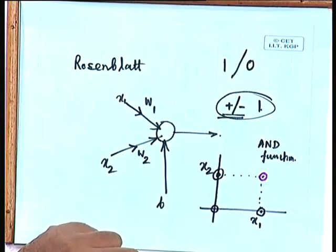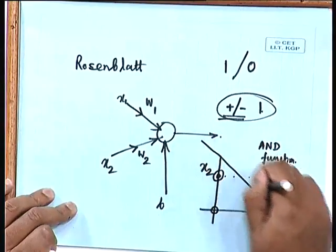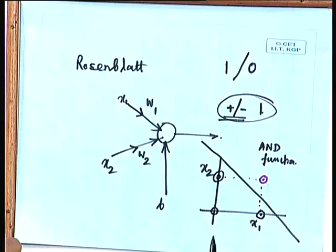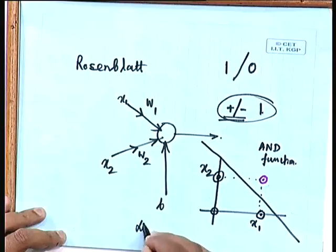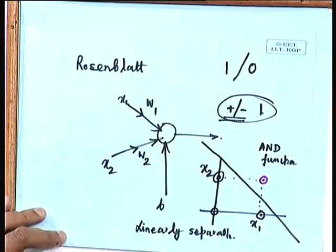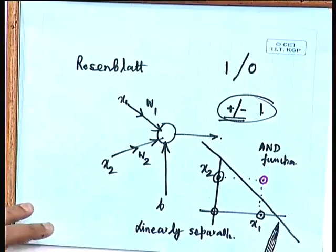Is the AND function a linearly separable pattern? Very clearly yes, because we can consider a line that separates the patterns giving response equal to 0 from those giving response equal to 1. So this is linearly separable, and naturally we can solve this problem using a two-input perceptron.